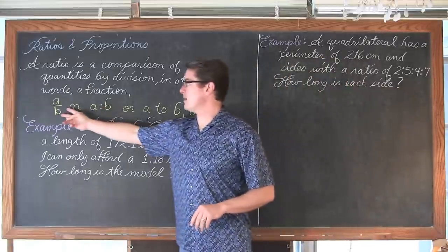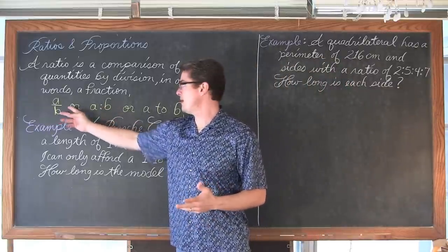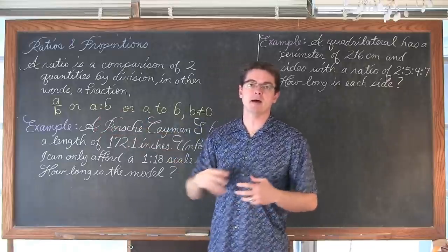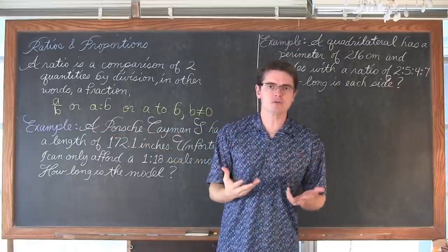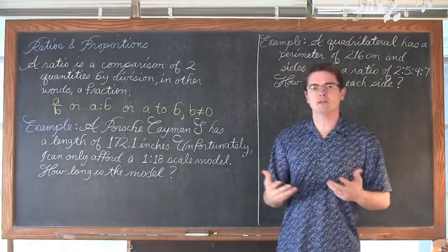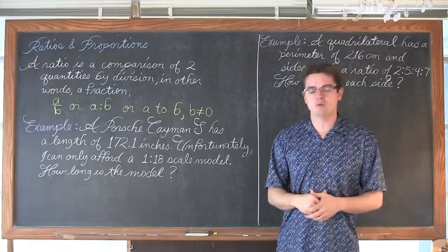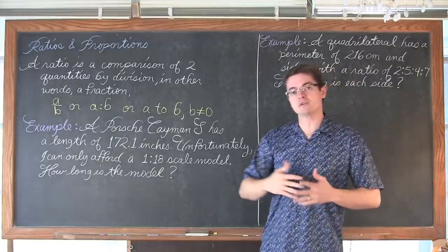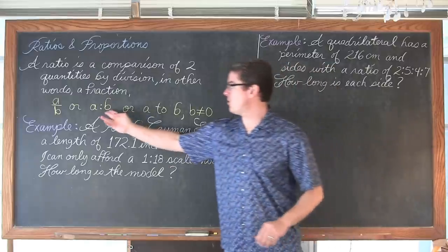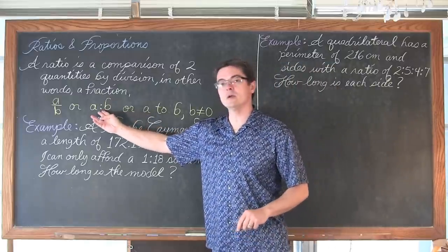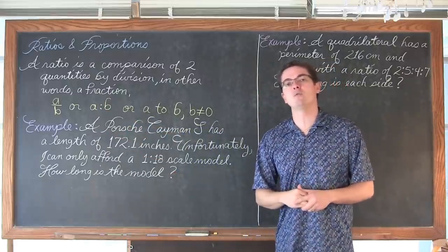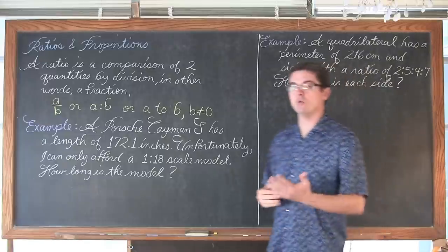We can write ratios in the traditional fraction format. We can write it with a colon, which we see a lot of times on the back of household cleaning bottles — maybe some kind of concentrate that you want to mix at different levels of strength. You also see colons when they talk about gambling odds and giving you the odds of winning.